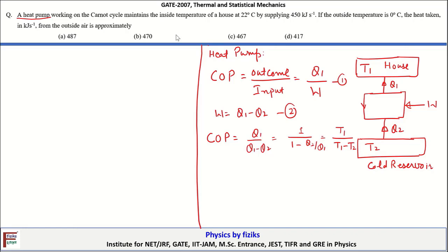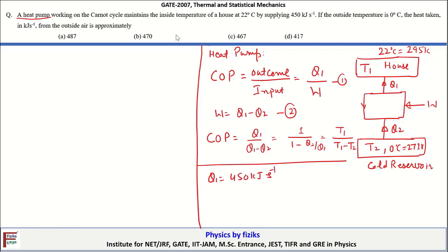T1 is given as 22 degrees Celsius, which equals 295 Kelvin. T2 is 0 degrees Celsius, which equals 273 Kelvin. The given parameters are: Q1 equals 450 kJ per second, T1 equals 295 Kelvin, T2 equals 273 Kelvin. We need to find Q2.